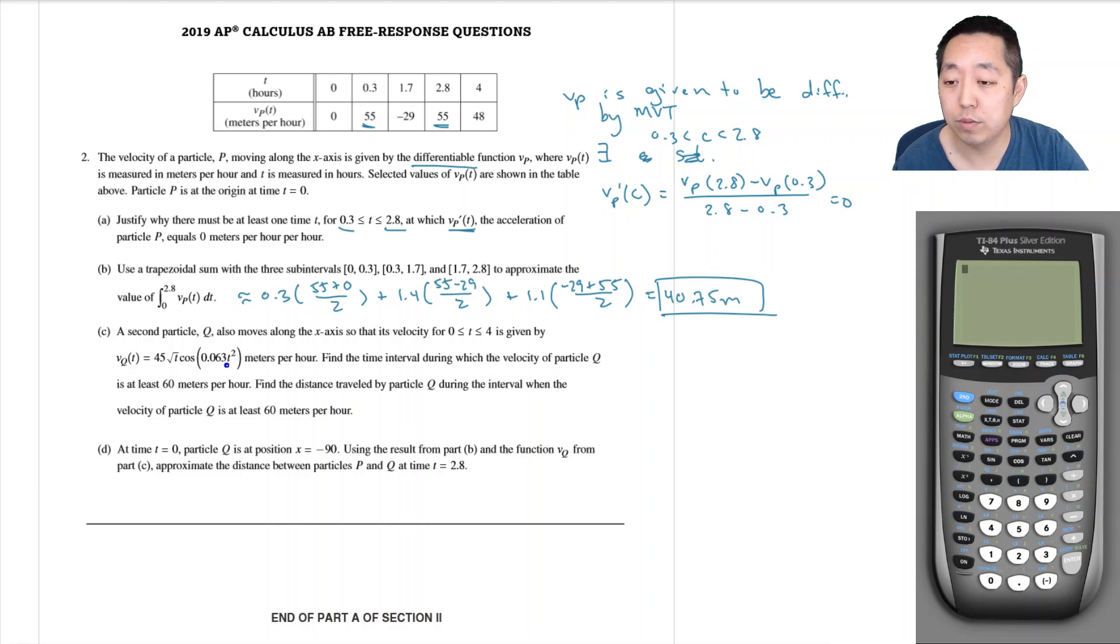So first I need to find these times, like when does this happen. If I use my calculator, I did similar to what I did before - I plotted first in y4 this equation: 45 square root of cosine 0.03 times x squared. And then because I want to know when it's greater than 60, I subtract 60 and plot this one. And then I can look for the zeros.